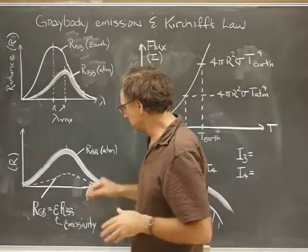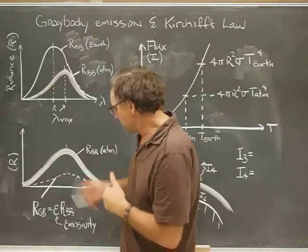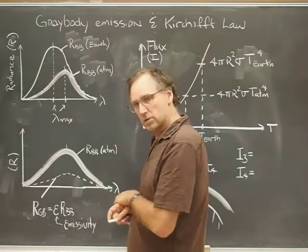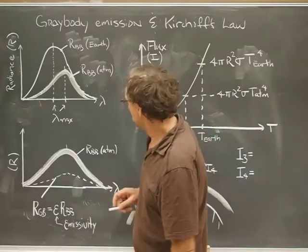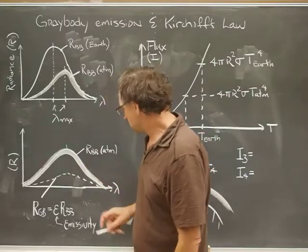We'll just multiply it by some number smaller than one. So this would be the black body radiance for the atmosphere as I've drawn it. We've just reproduced it down here.